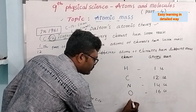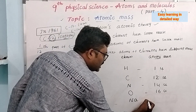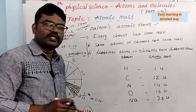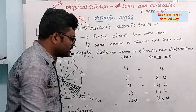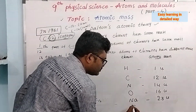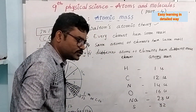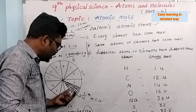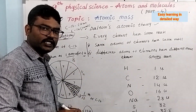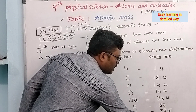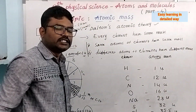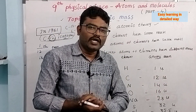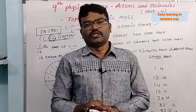Sodium (Na, natrium) needs 23 unified masses — 23 one-by-twelfths of carbon atoms are equal to 1 sodium atom. So sodium's atomic mass is 23. Sulfur is 32, and chlorine is 35.5. Calcium is 40. These are the atomic masses of a few elements in atomic mass units or unified masses.